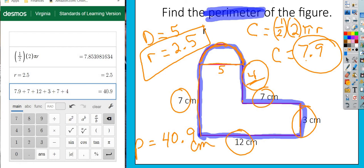Perimeter is regular units. Area is squared. Volume is cubed.